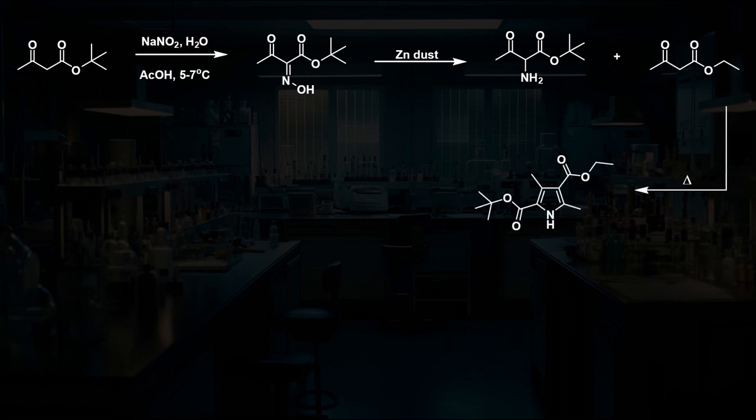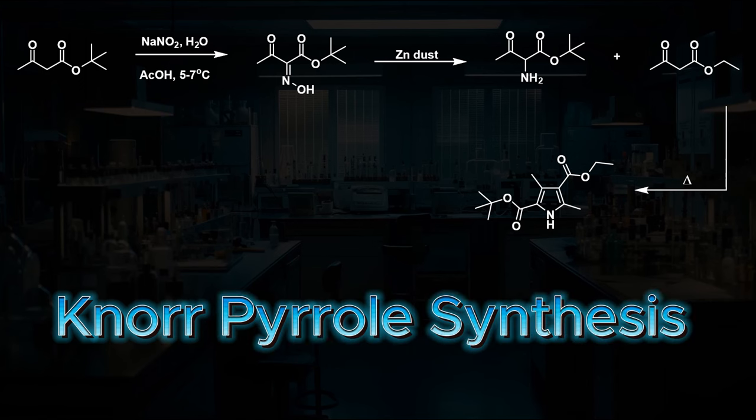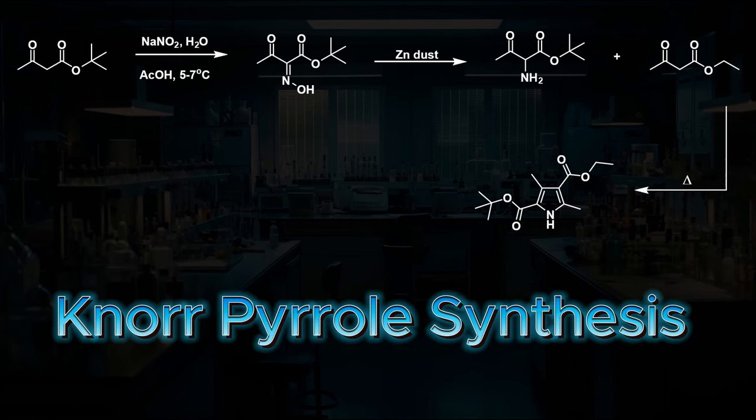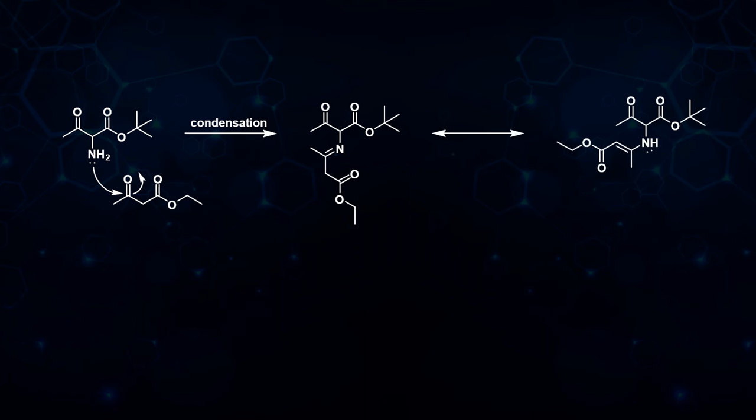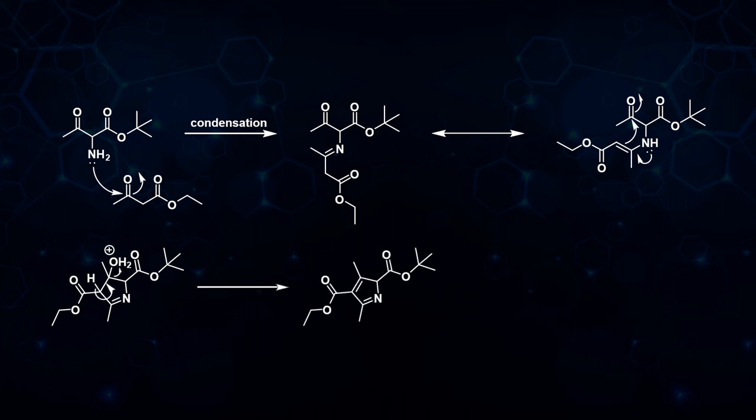This sequence of reactions is called the Knorr pyrrole synthesis, and the mechanism is as follows. The amine undergoes a condensation reaction with the ketone carbonyl to form an imine, which can tautomerize to an enamine. The enamine can then attack the second ketone carbonyl, which after elimination of water and tautomerization, gives the pyrrole product.